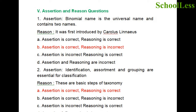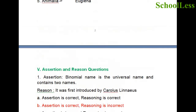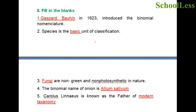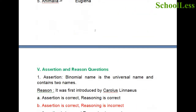Question 5: Assertion and reason. Assertion: Binomial name is the universal name and contains two names. Reason: It was first introduced by Carolus Linnaeus. The answer is choice B — assertion is correct, reasoning is incorrect. The binomial name is indeed a universal name with two names: genus and species. However, it was not first introduced by Linnaeus; it was introduced in 1623 by Gaspard Bauhin and later adopted by Linnaeus.